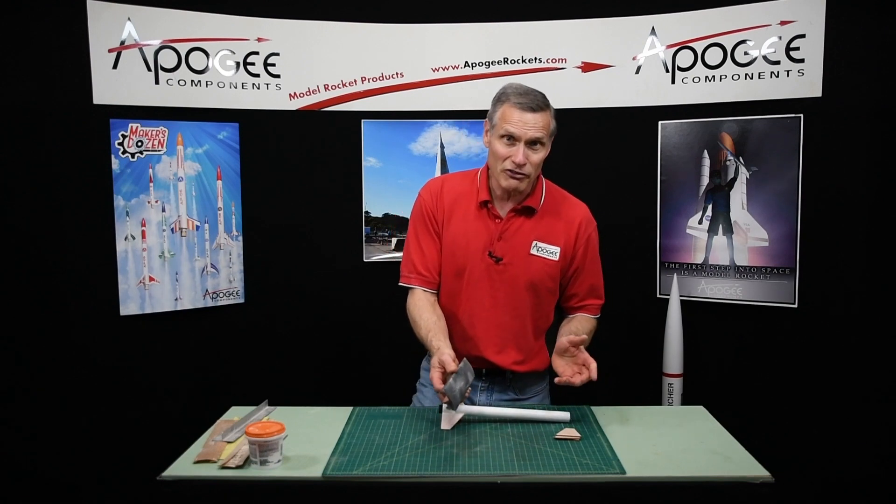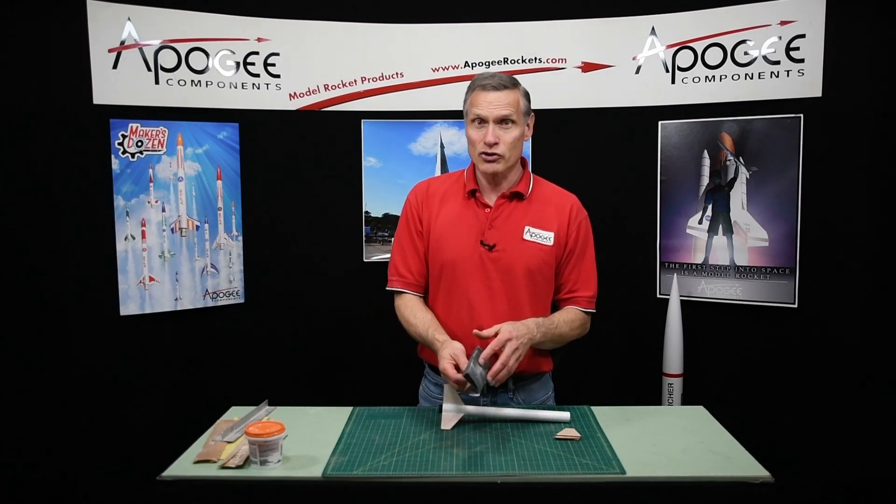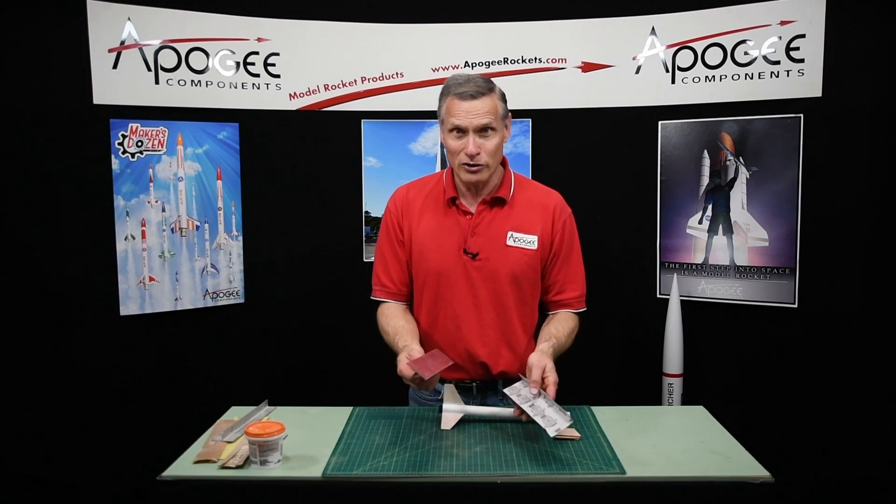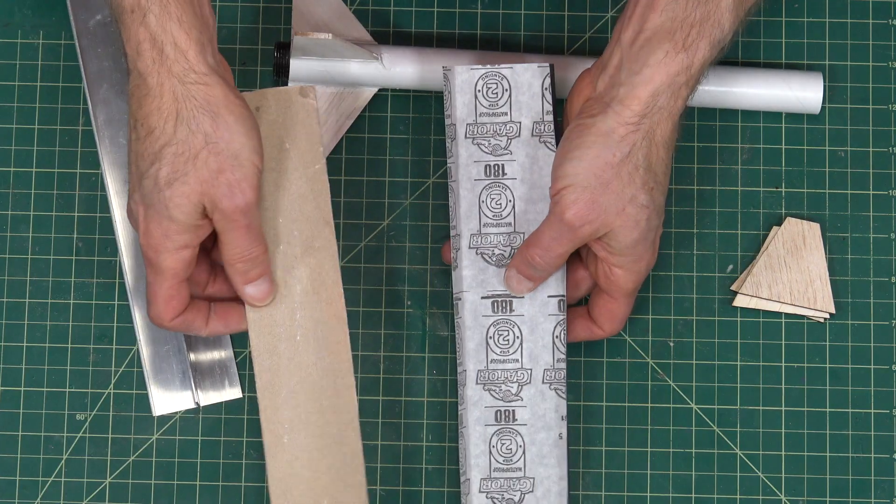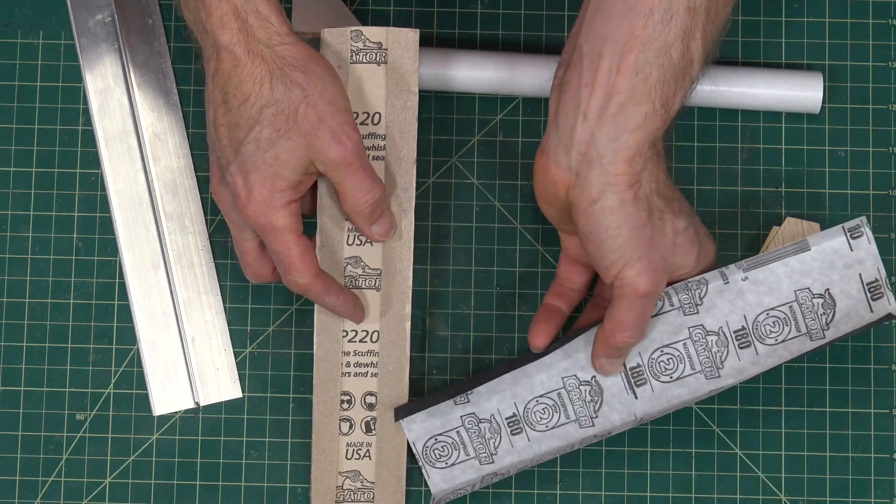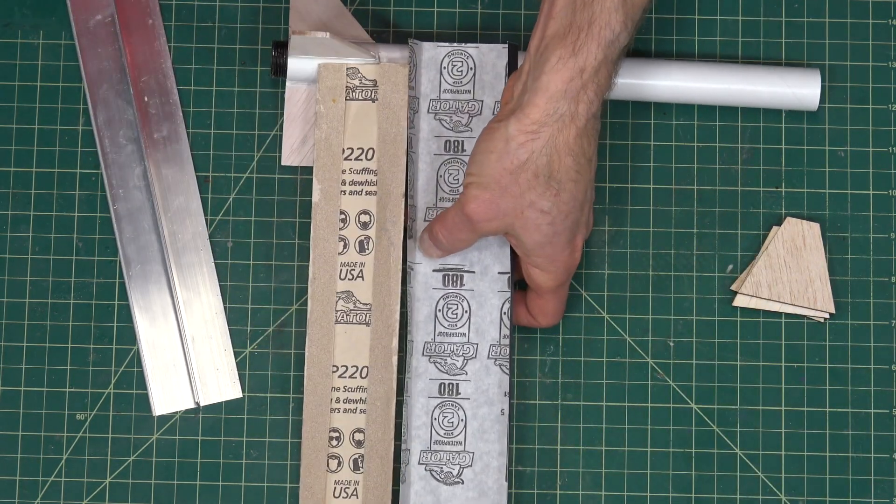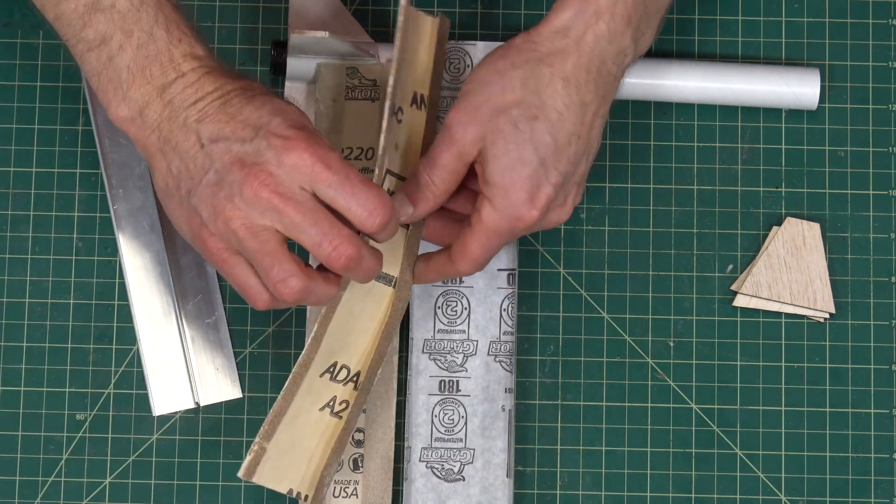But since I've discovered a trick, I no longer tape any of them. I like to use a lot of different grits of sandpaper. Here's 220, and this is 180. Over here I've got about an 80 grit, it's really coarse.